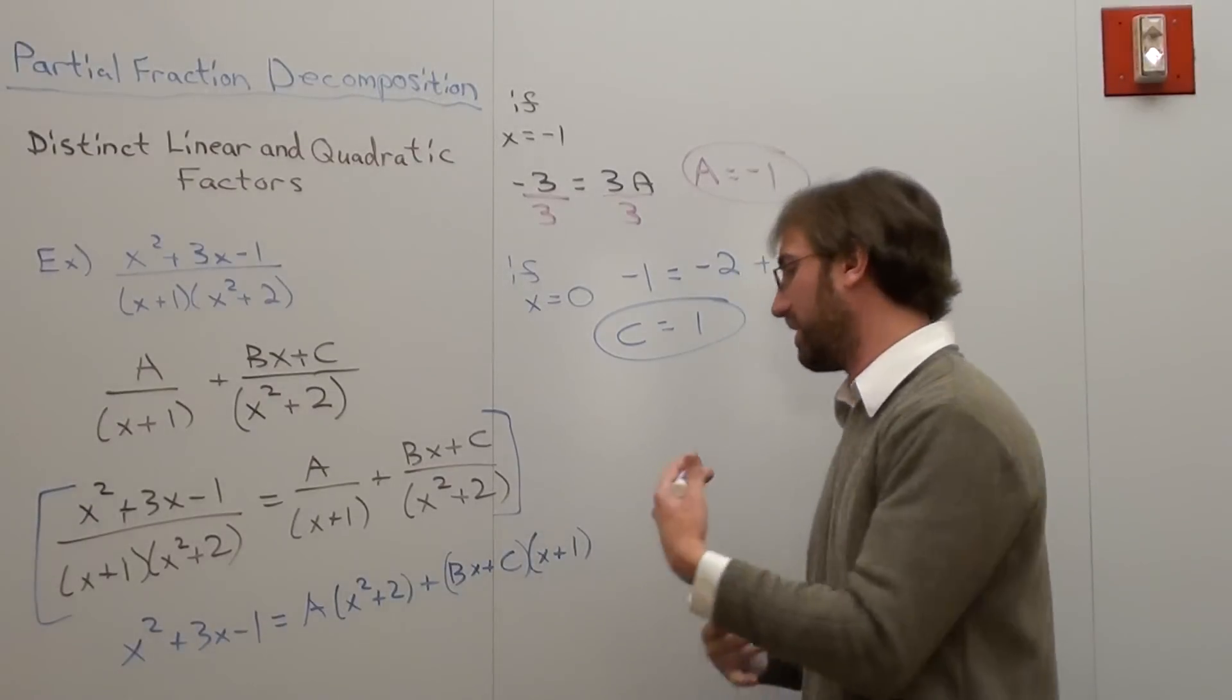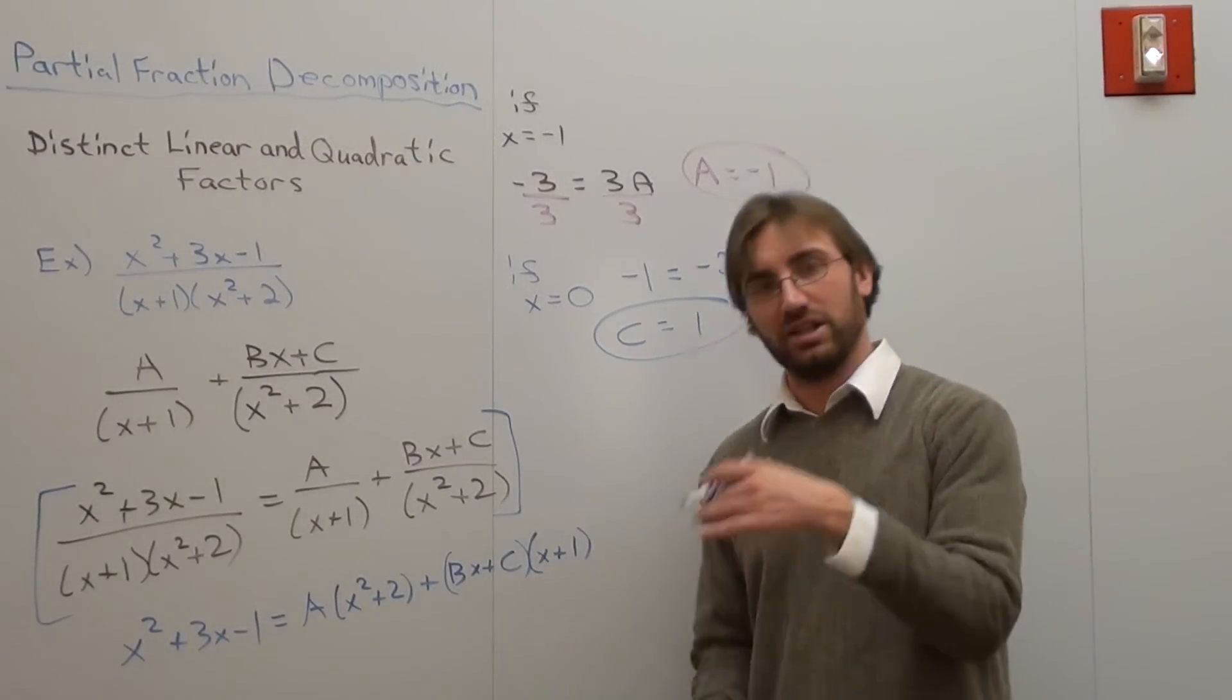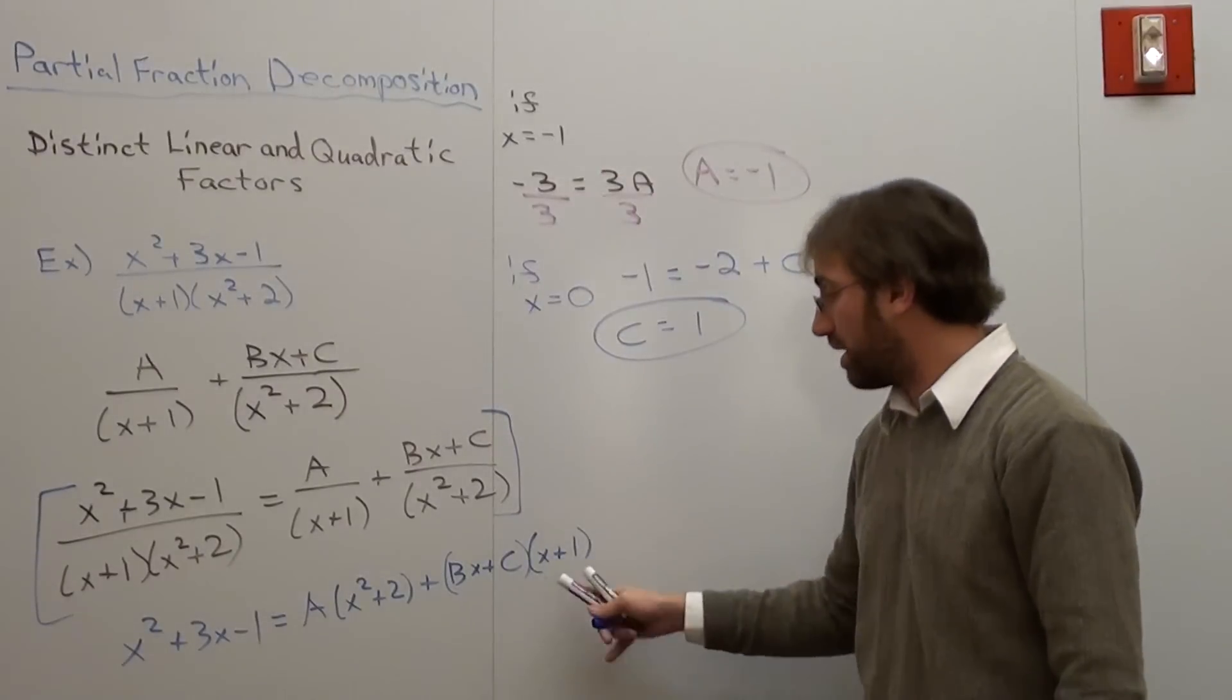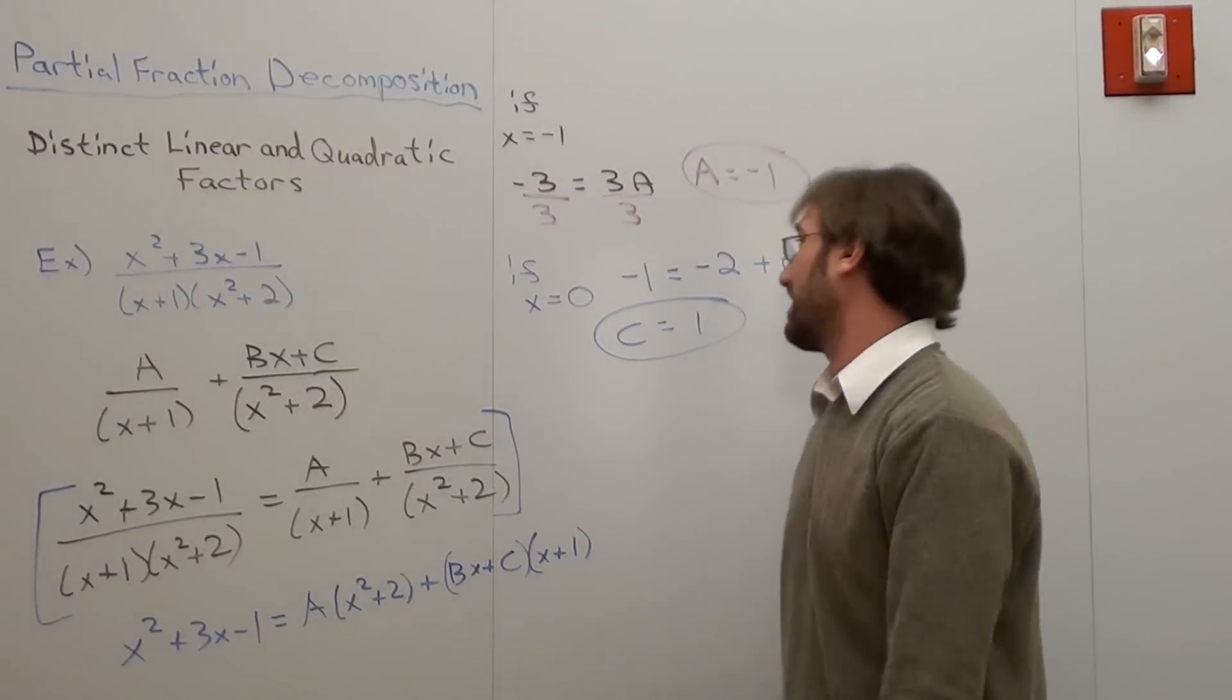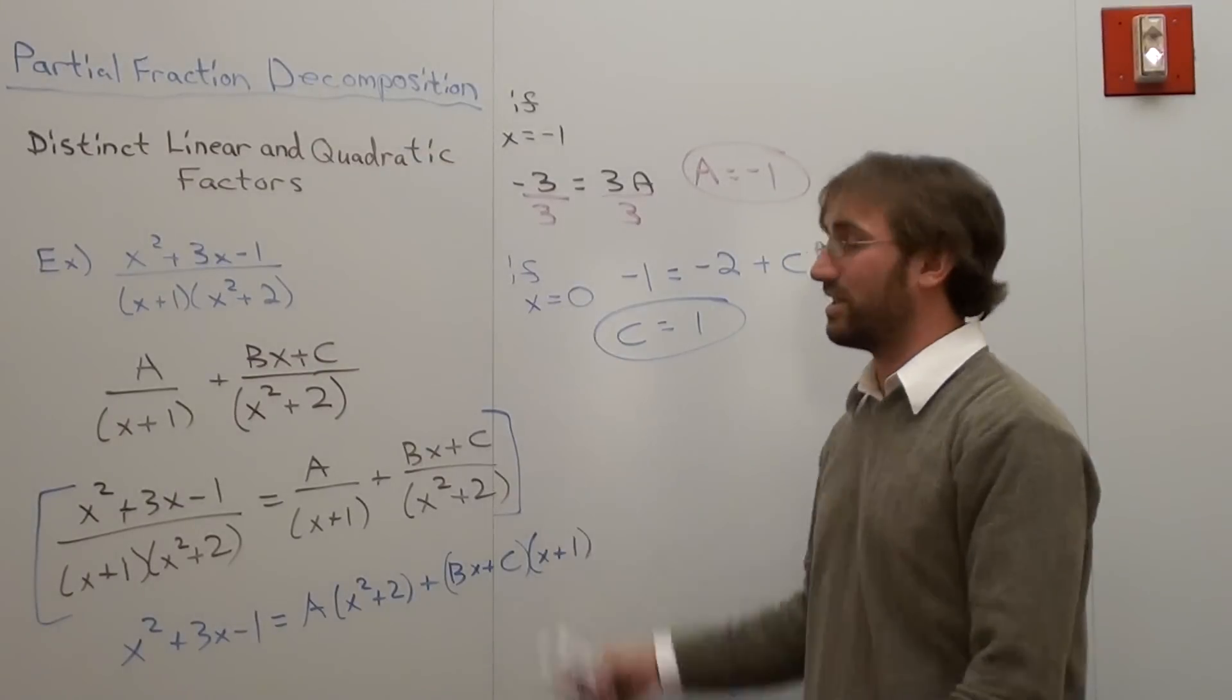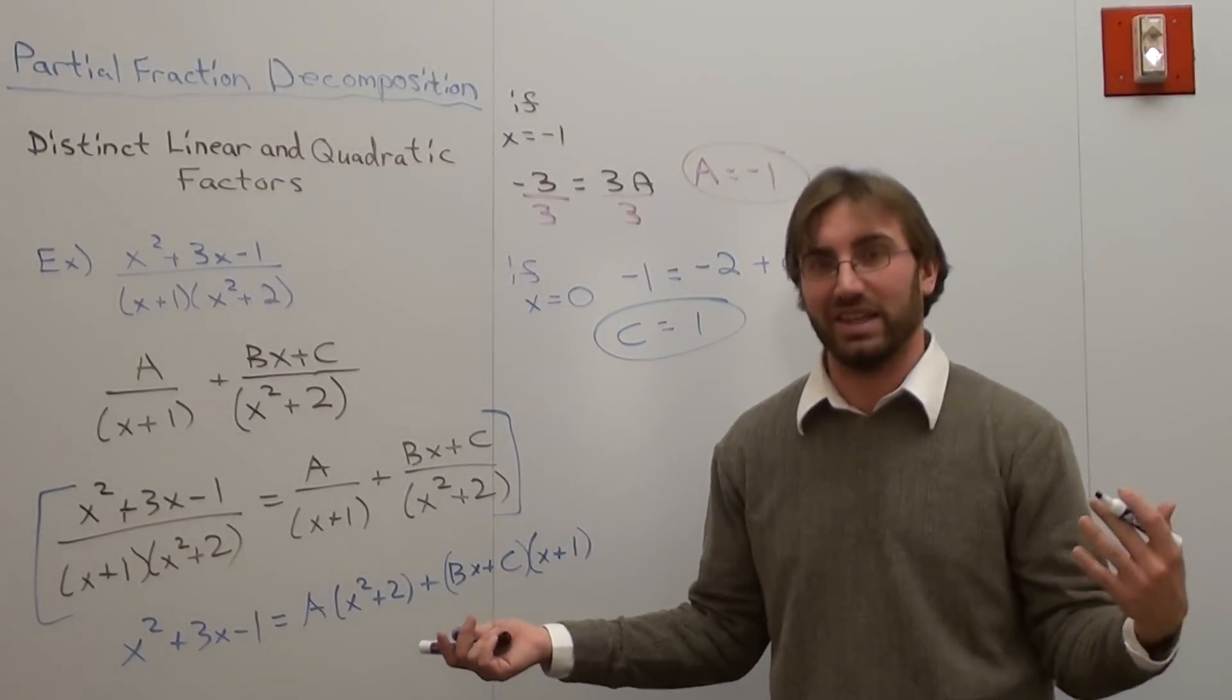So c equals 1, a equals negative 1. I want to figure out a b value. I can't plug in 0, because if I do, it's going to cancel out my b, as I've already shown. If I plug in negative 1, it's going to cancel out my b, so it's not going to work. So I've got to figure out a value that's not negative 1, and it's not 0. The easiest value I can think of is 1.